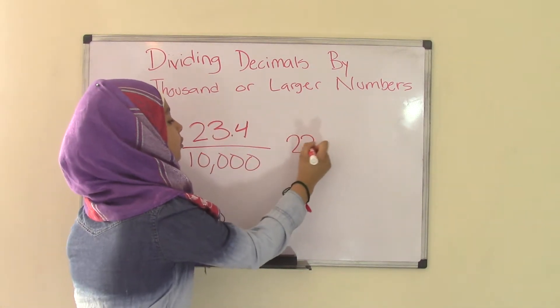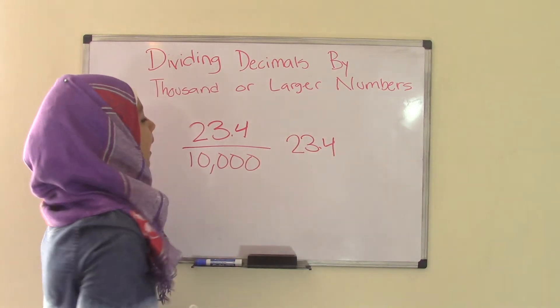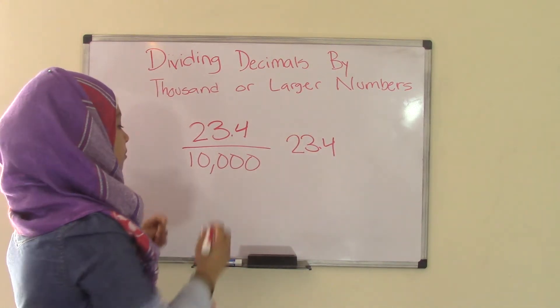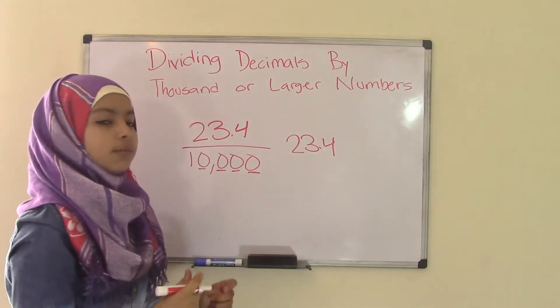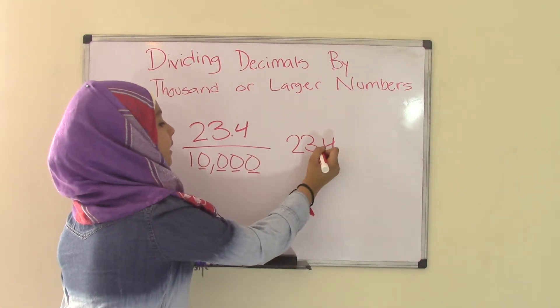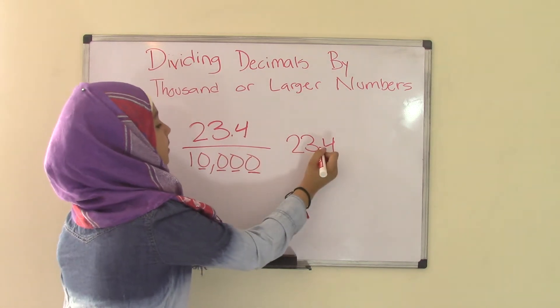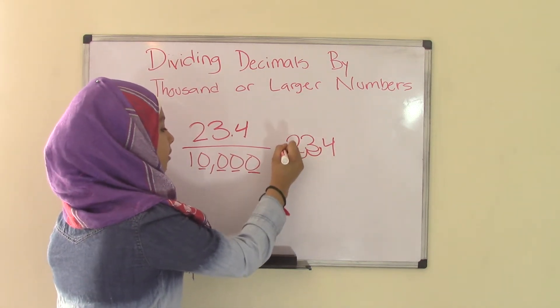You're going to, once again, write the decimal number over here, 23.4. And count the number of zeros in 10,000. That's 1, 2, 3, 4. And you're going to move from right to left. So you're going to take this decimal point and move four spaces. 1, 2, 3, 4.